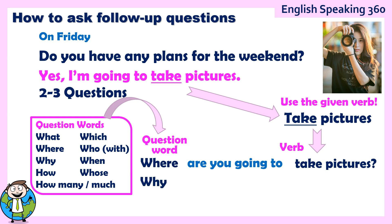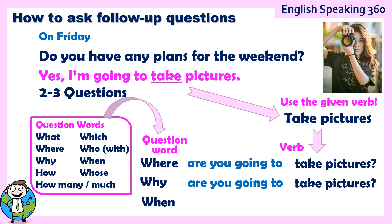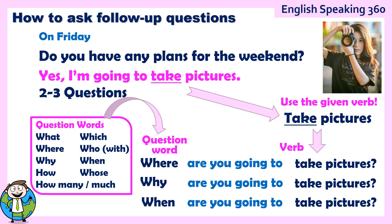You could also ask, why? Why take pictures? But the better question is, why are you going to take pictures? You could also say, when — when are you going to take pictures? So you see, just by using the given verb, you can make three questions super easily with be going to.